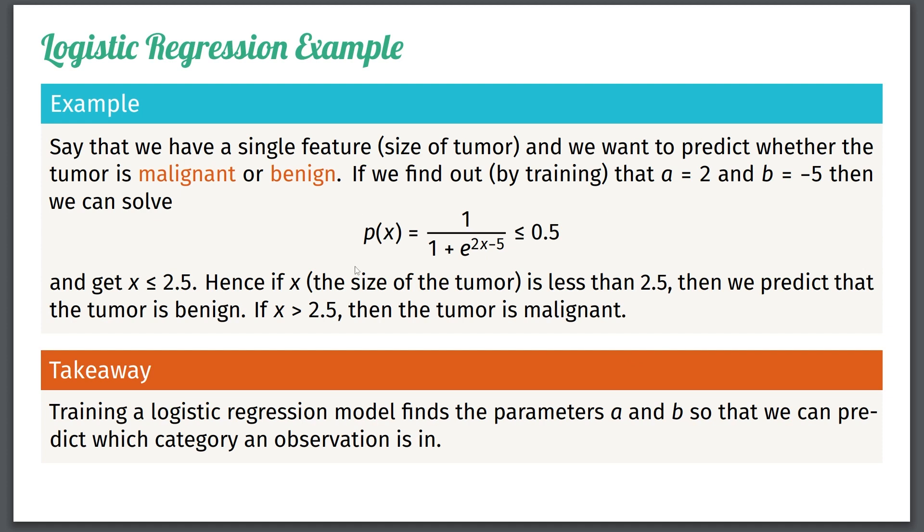So of course, in scikit-learn, we do the training, but also this final prediction by solving this inequality and so on, this is automatically done in scikit-learn, so you don't really need to understand the computations in detail. Just remember the broad takeaway that logistic regression finds these parameters. Once you have the parameters, you can predict which category an observation lies within.